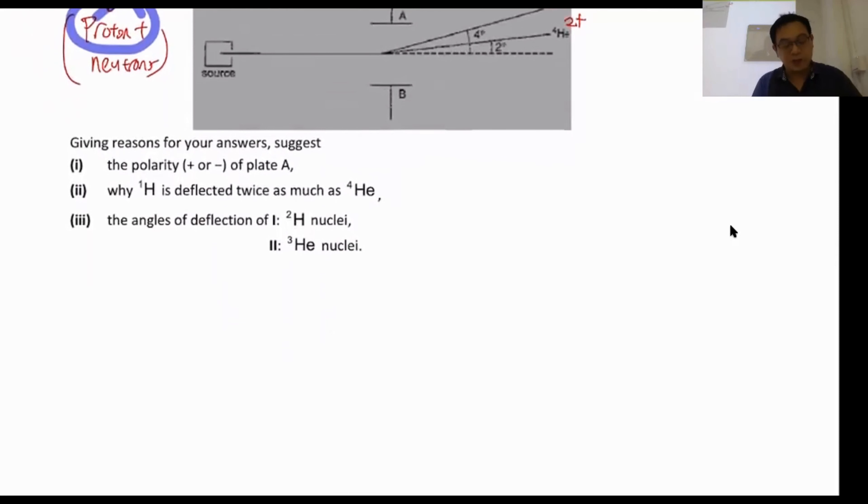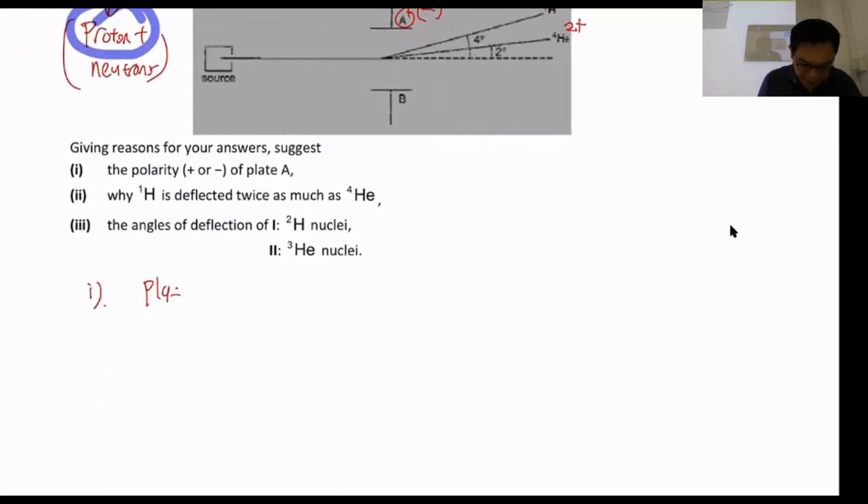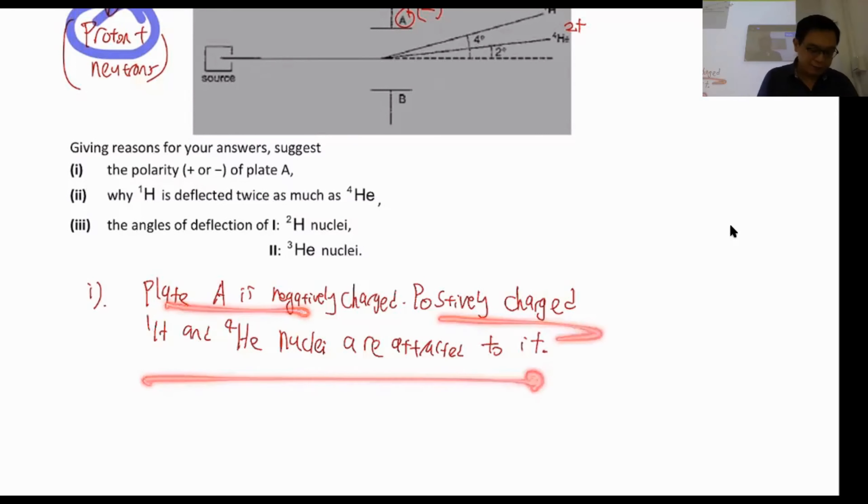Let's take a look at part one. Giving reasons for your answer, suggest the polarity (plus or minus) of your plate A. So what is the polarity here? Now, first of all, I think we can determine the polarity likely is negative. But how do we explain in words? This is the way how we explain in words. You will say that plate A is negatively charged because positively charged ¹H and ⁴He nuclei are attracted to it. So you state and you reason it because the nuclei are attracted to the negative terminal. And here we go. Part one is done.